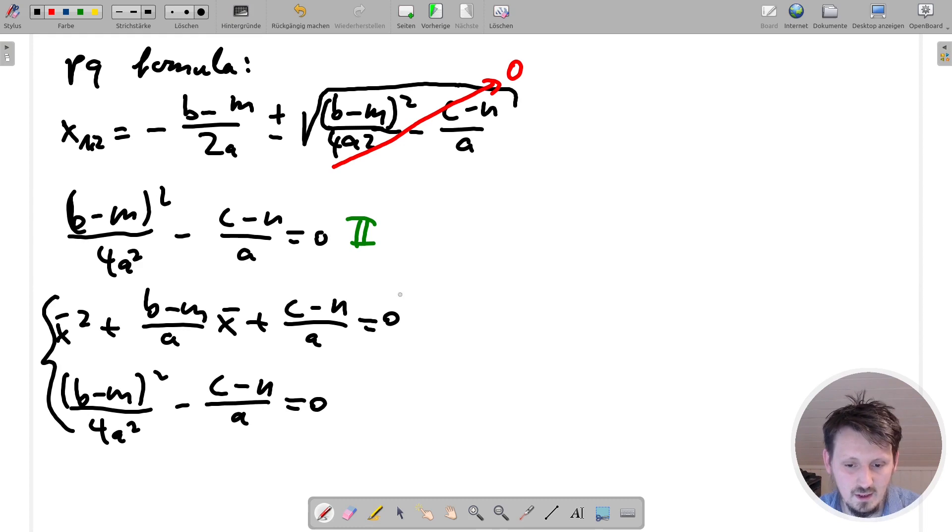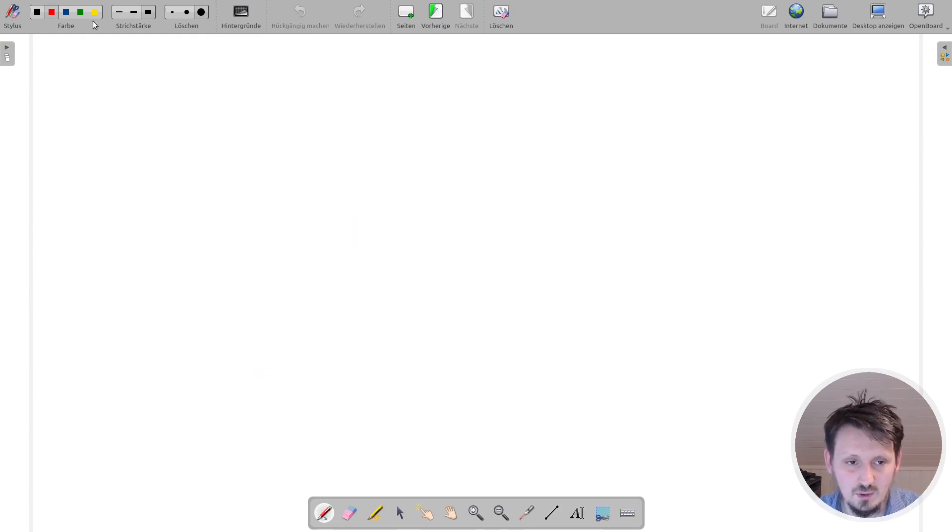And, yeah, what we can do, we see now if we, I mean, there are many possibilities how to solve that, but the easiest one is just to add the second one to the first one now because then, as you can see, this part here, this part here actually vanishes now. So maybe we can go again to a new page.